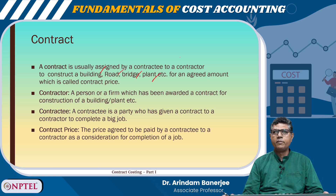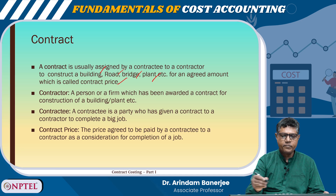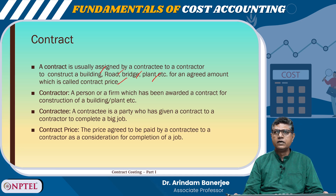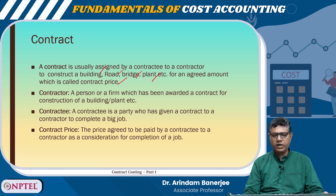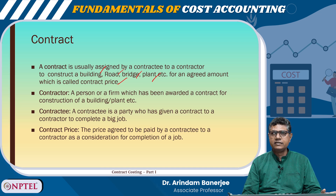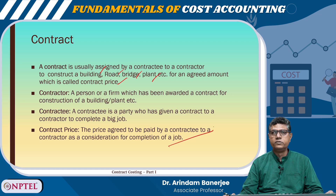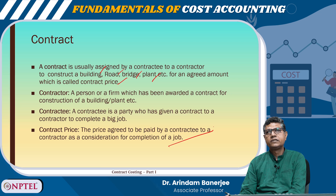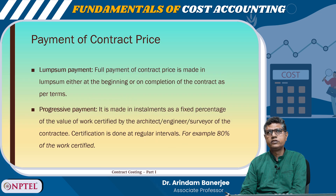For an agreed amount which is called contract price. There is a contractor — a person or a firm which has been awarded a contract for construction of a building, plant etc. There is a contractee who is the party who has given a contract to a contractor to complete a big job. Contract price is the price agreed to be paid by a contractee to a contractor as consideration for completion of the job.